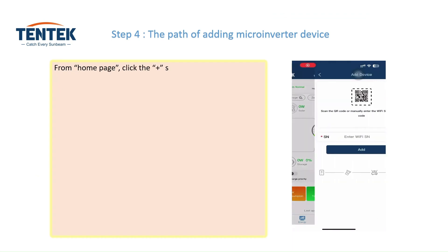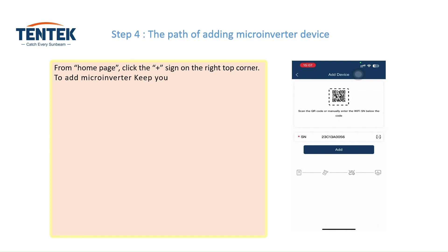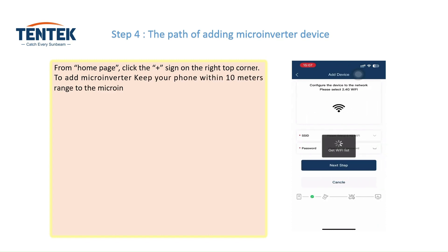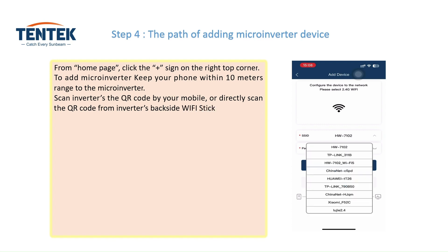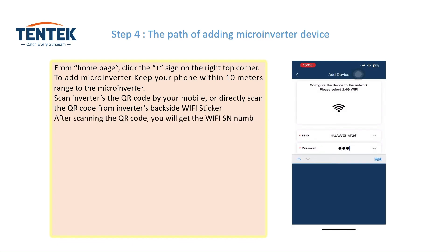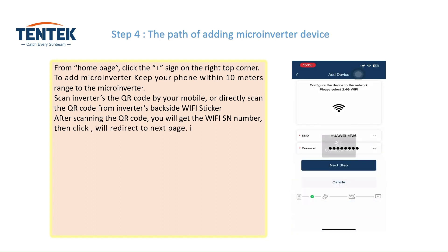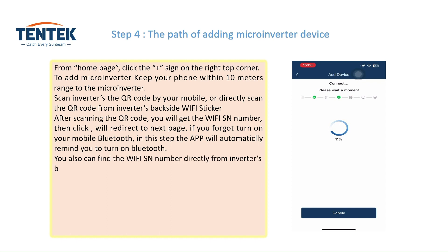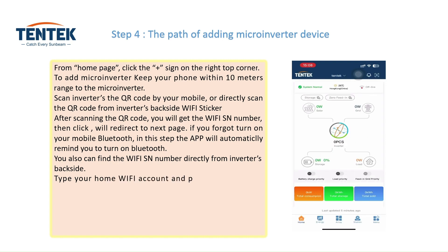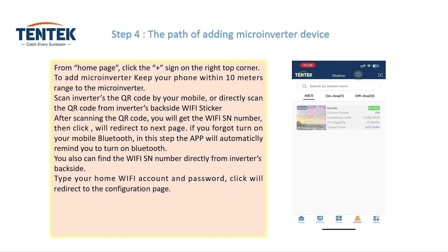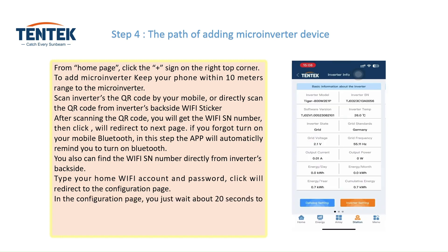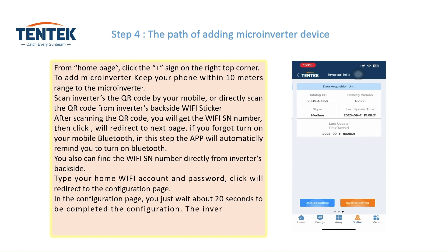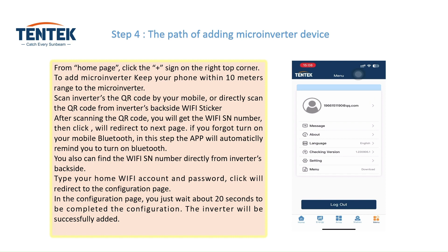The path of adding microinverter devices: from the home page, click the plus sign on the right top corner. To add a microinverter, keep your phone within 10 meters range of the microinverter. Scan the inverter's QR code with your mobile, or directly scan the QR code from the inverter's backside Wi-Fi sticker. After scanning, you will get the Wi-Fi SN number, then click to redirect to the next page. If you forgot to turn on your mobile Bluetooth, the app will automatically remind you to turn on Bluetooth. You can also find the Wi-Fi SN number directly from the inverter's backside. Type your home Wi-Fi account and password, then click to redirect to the configuration page. In the configuration page, wait about 20 seconds for the configuration to complete. The inverter will be successfully added.